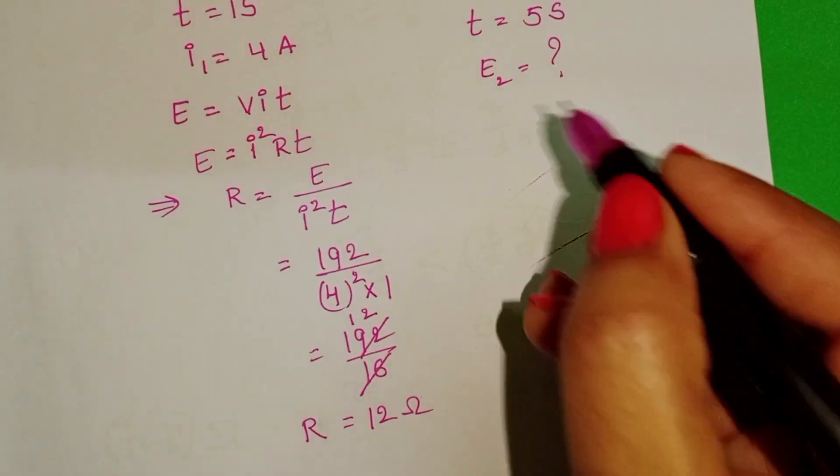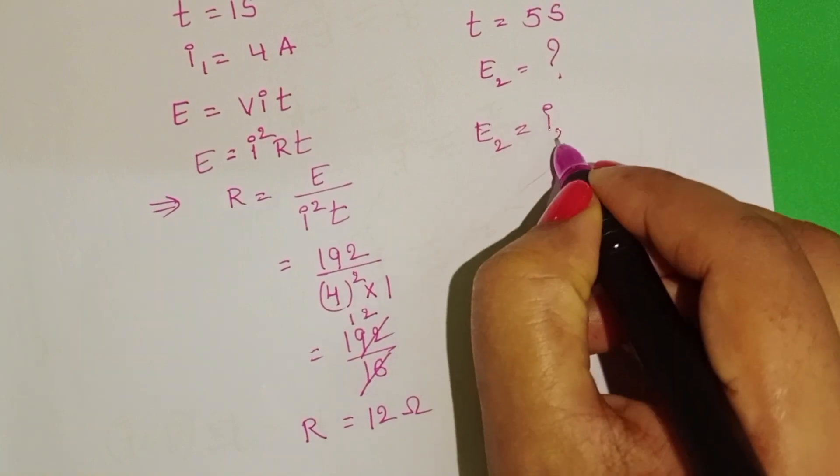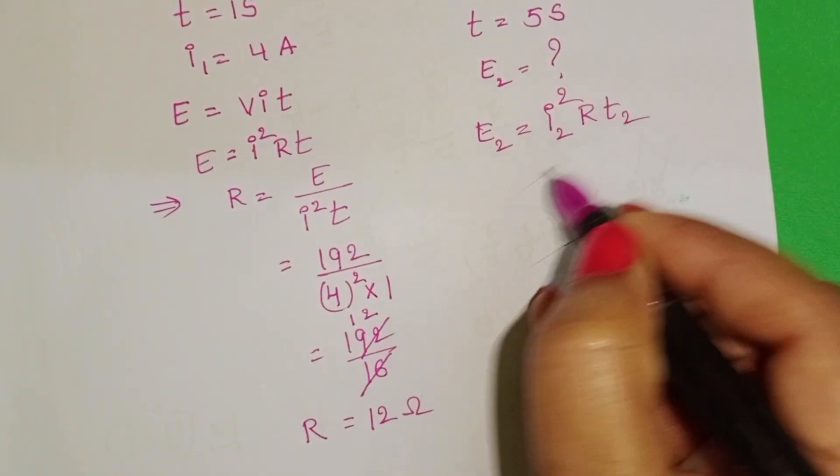But resistance is constant. Take the formula: E2 equals I2 squared RT2.